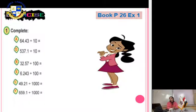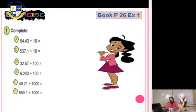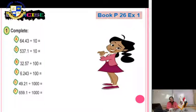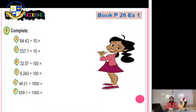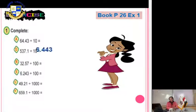Exercise — complete: (a) 64.43 divided by 10. We have division, so move the decimal point to the left — 1 digit only, because we have only one zero. The answer is 6.443.